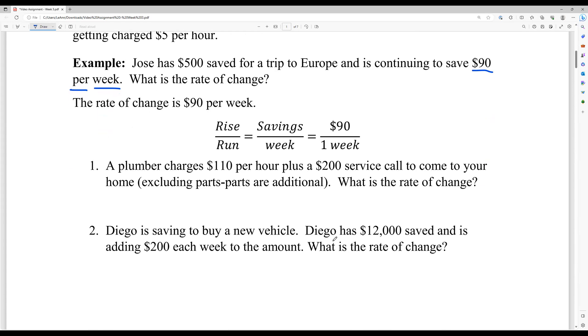A plumber charges $110 per hour plus $200 service call to come to your home, excluding parts, parts are additional. So this is just their base fees. What is the rate of change? We have the $200 and we have the $110, but the $110 notice has the phrasing it's per hour. So the $110 per hour is our rate of change.